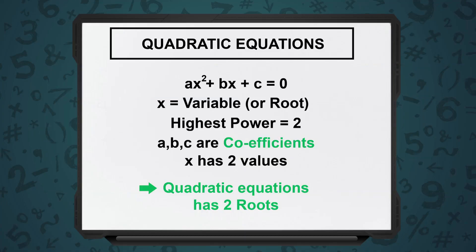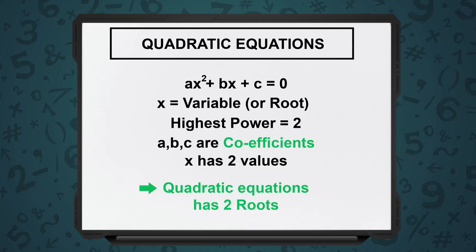Quadratic equations are equations in the form Ax² + Bx + C = 0. The highest power in a quadratic equation will always be 2, which means it will always be some x². It will not be x³ or x raised to 5. The standard form is always Ax² + Bx + C = 0.